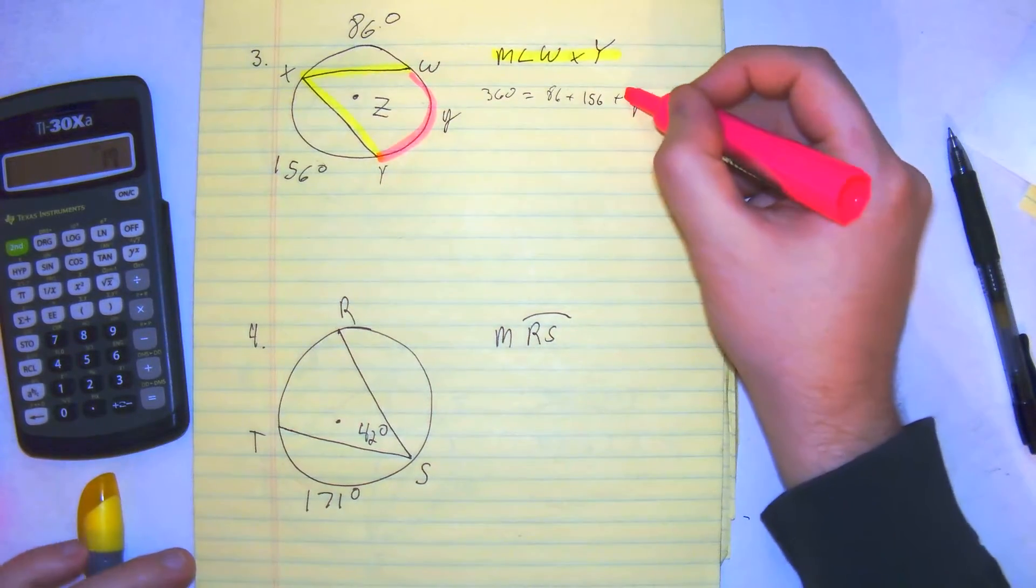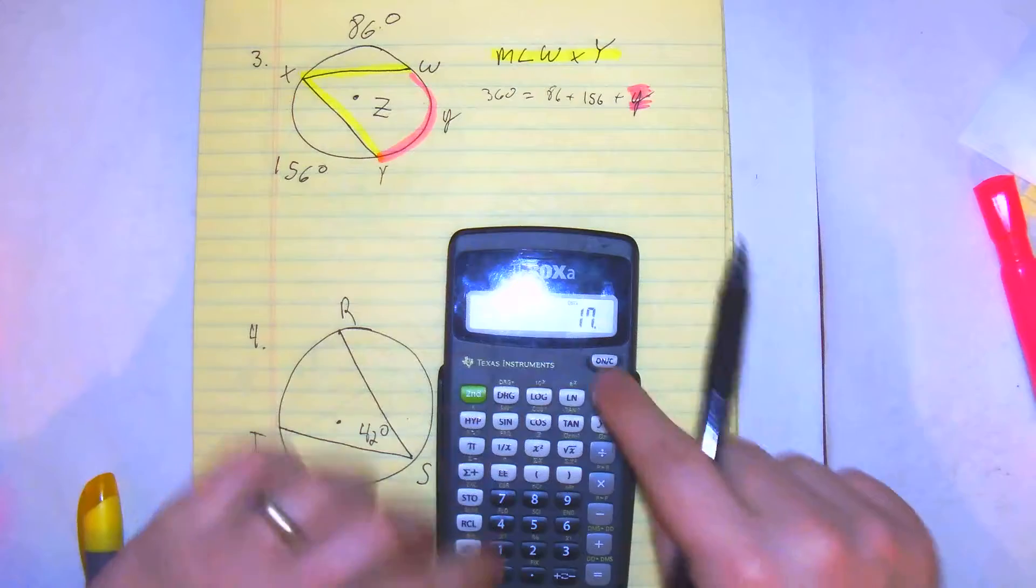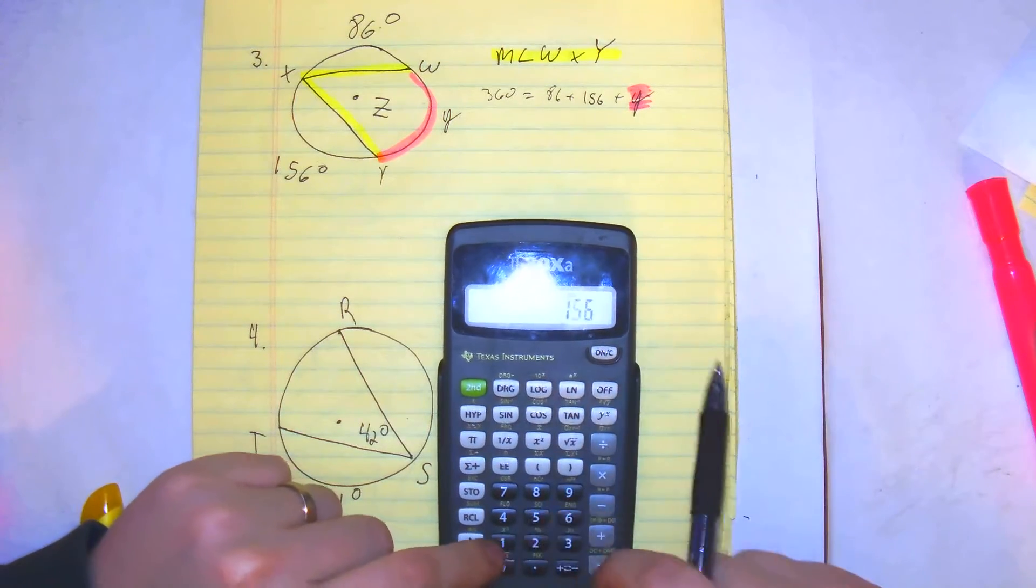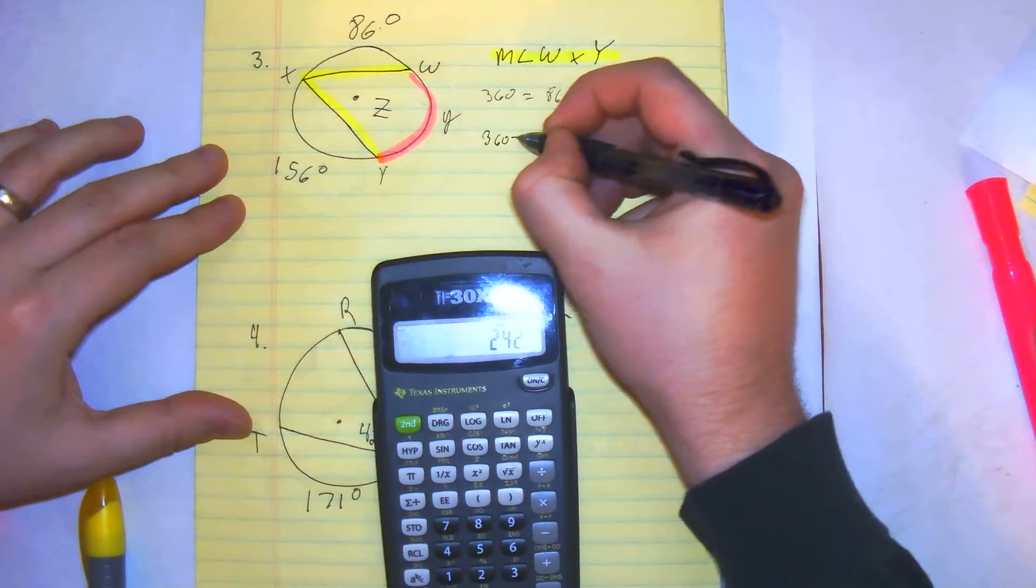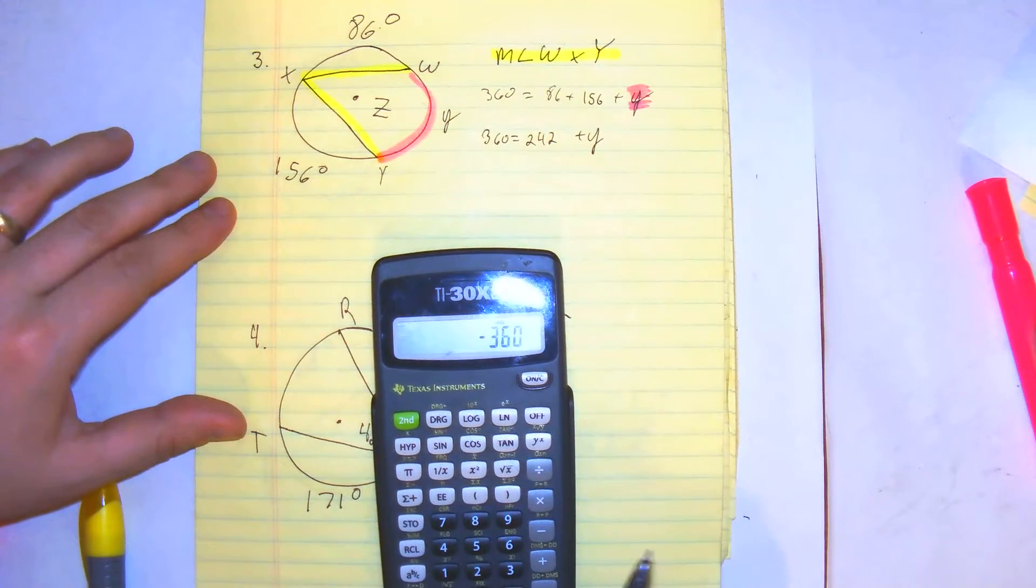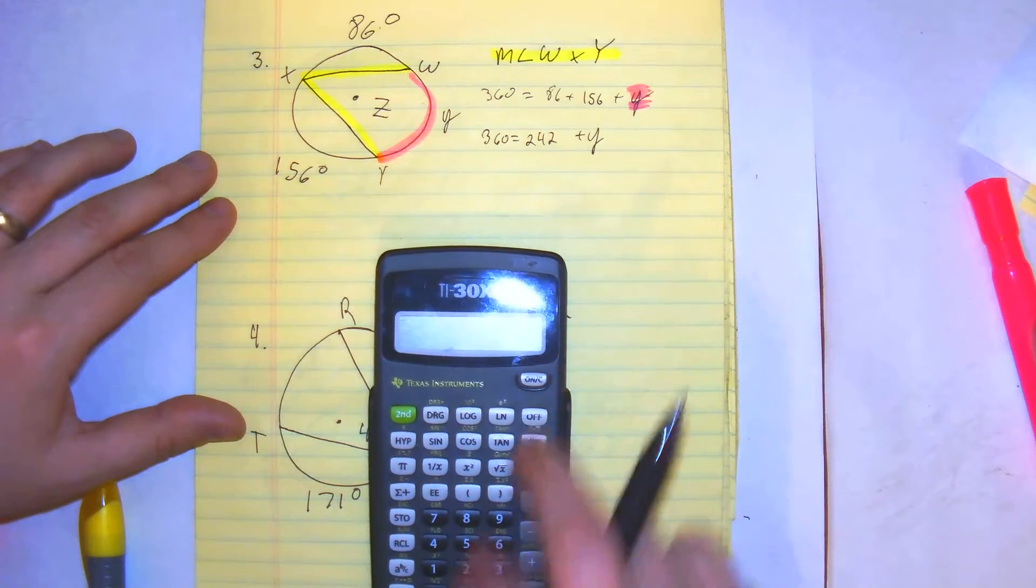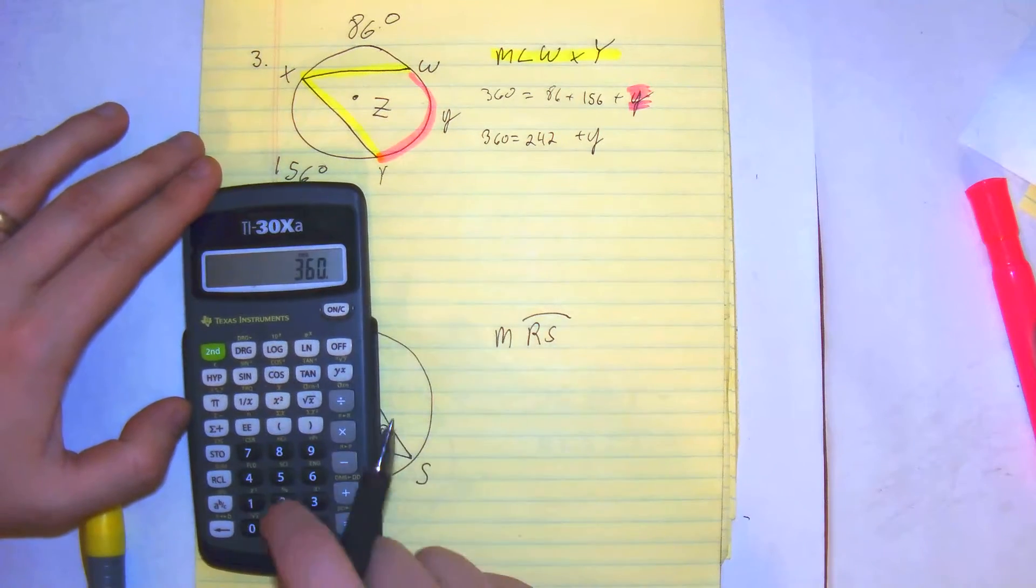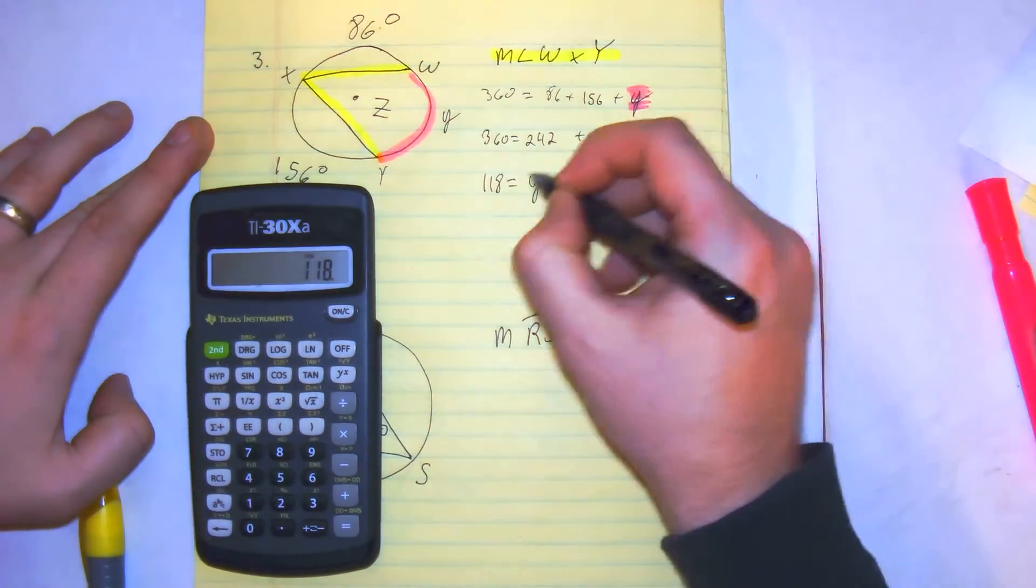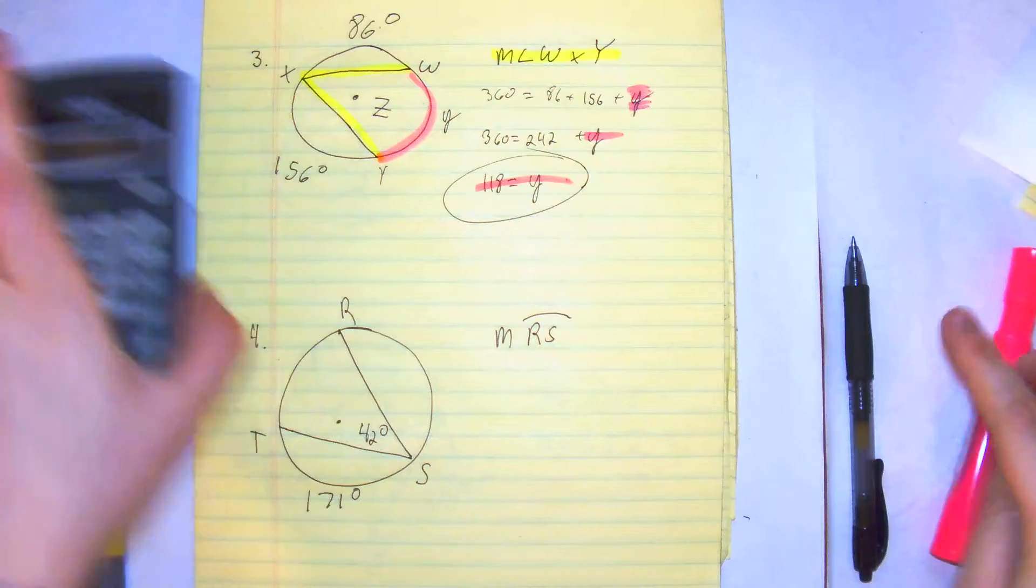360 being the entire circle. All right. 86 plus 56 gives you 242. And then just subtract that from 360. 360 minus 242, you get 118. So we get that as 118.